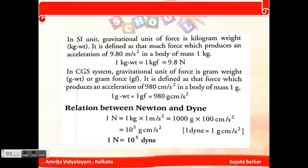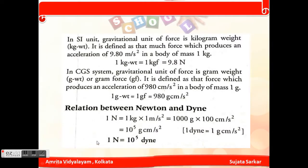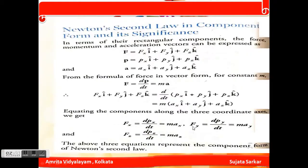Now, the relationship between Newton and dyne: 1 Newton equals 1 kg times 1 m/s², which is 1000 g times 100 cm/s², equivalent to 10 to the power 5 g·cm/s². Therefore, 1 Newton equals 10 to the power 5 dynes. This is the relationship between Newton and dyne.